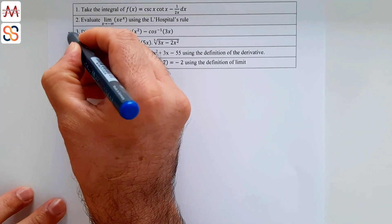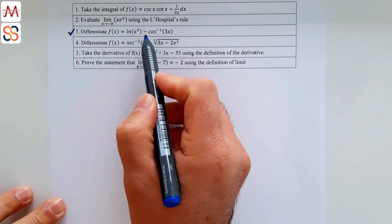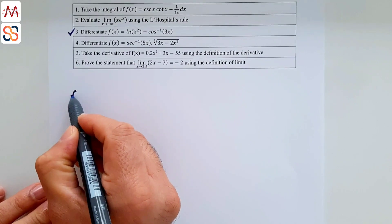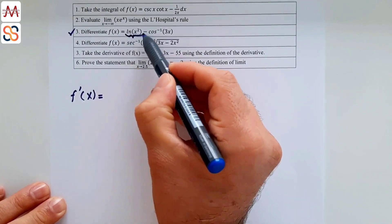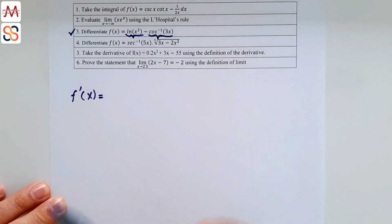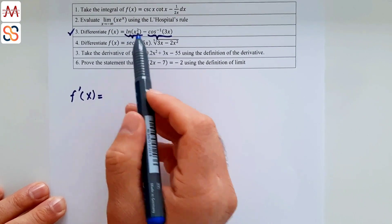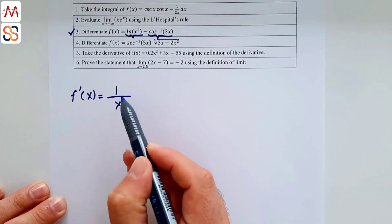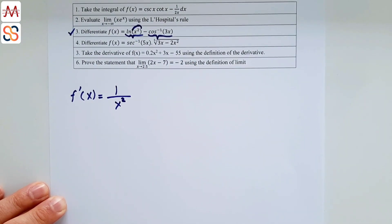Question 3: differentiate f(x) = ln(x²) - arccos(3x). We have f'(x) with two terms. For the natural log term, the derivative is 1 over that argument, so 1/x², but since x² is an inside function we must also take its derivative, which gives 2x.